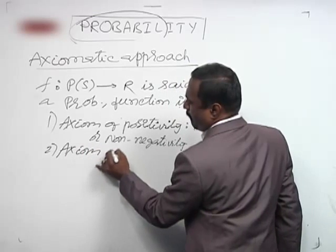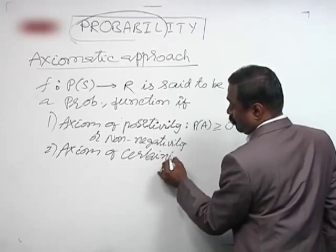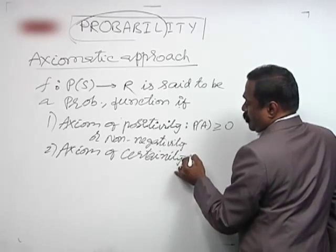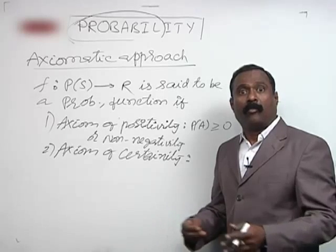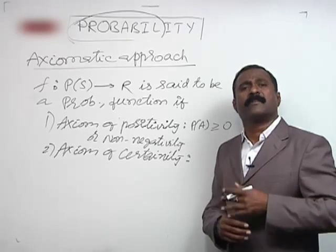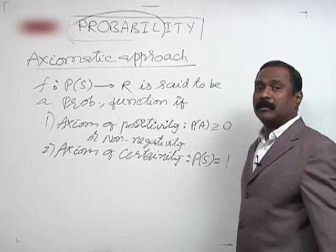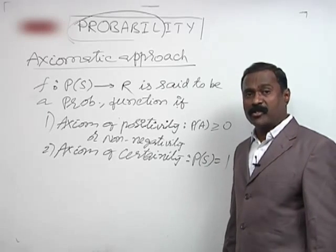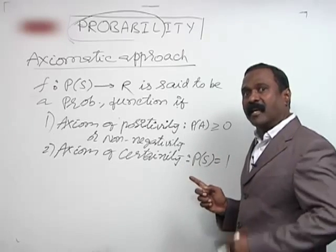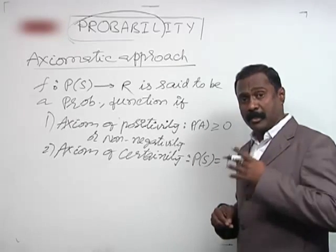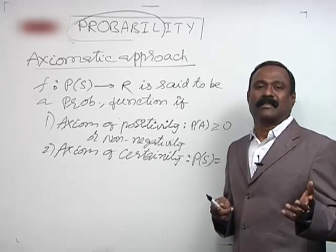Axiom two: axiom of certainty. If you take the probability of the sample space S, it should always be 1 — meaning all possible outcomes are known to us. In other words, you must know all the possible outcomes whenever an experiment is conducted.